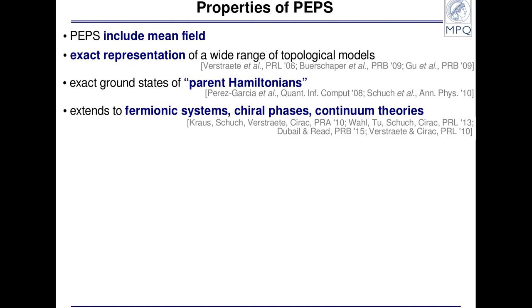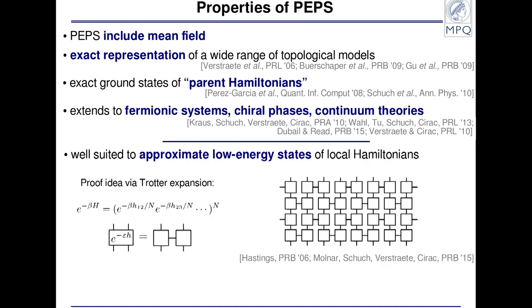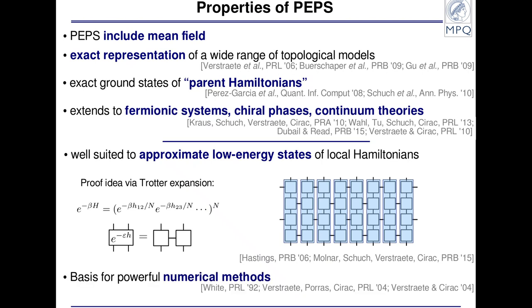This tells us that certain types of phases can be modeled exactly. But conversely, these states are also very well suited to generally approximate the low-energy physics of systems with local interactions. The intuitive reason: to get a ground state, we can do imaginary time evolution to cool the system, and this cooling can be implemented in a quantum information way by using up some entanglement — but not much, if we do many small Trotter steps. So we can compress all the entanglement and do this with a relatively low amount of entanglement. Because they approximate ground states well, these states form a basis for very powerful numerical methods.